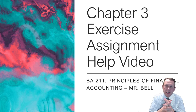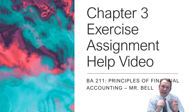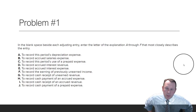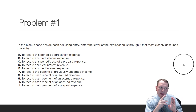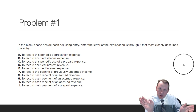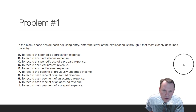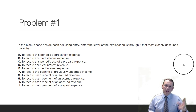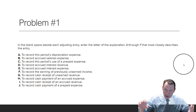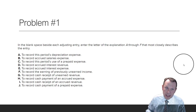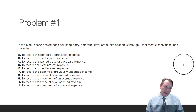Welcome. We're going to do the Chapter 3 exercise assignment help video today. This is for Principles of Financial Accounting, and I'm Mr. Bell. So the very beginning problem we're going to do is they list out different transaction descriptions or adjusting entry descriptions, because we're doing adjusting entries in this chapter. We'll have descriptions of possible adjustments and a list of actual journal entries — debit and credit — and we're going to match them up.